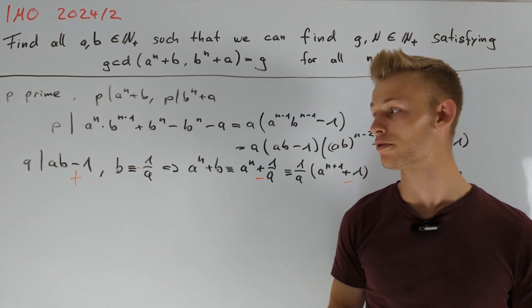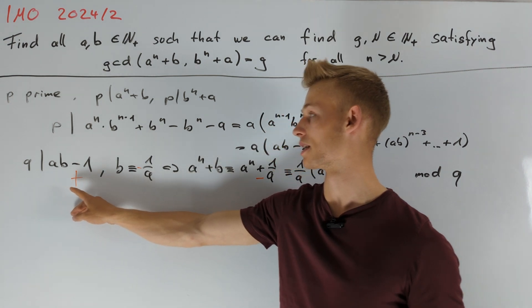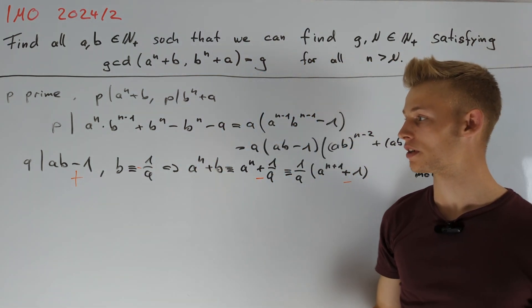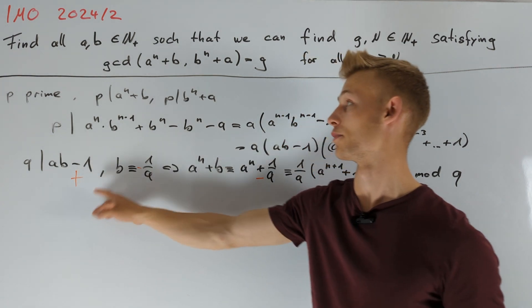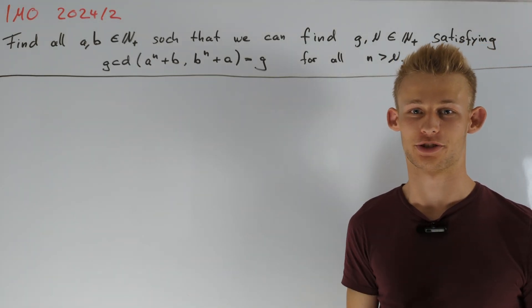And now, to convert this into a proof, we want to prove that all prime divisors q of ab plus 1 divide g. Actually, we will be able to prove that ab plus 1 divides g. Now, let me prove to you that this proof is really short.